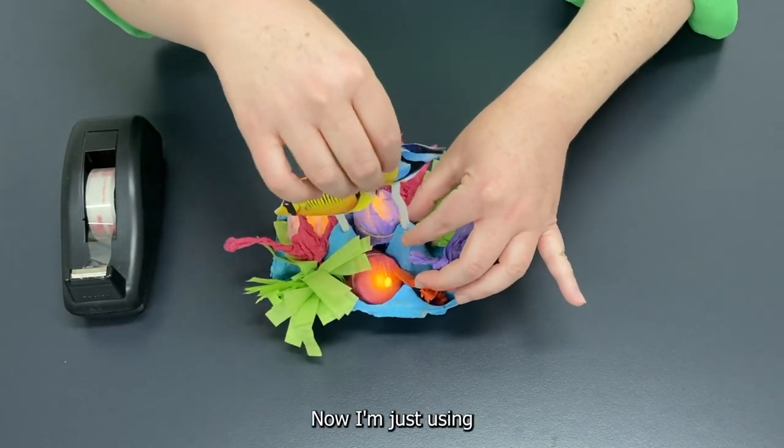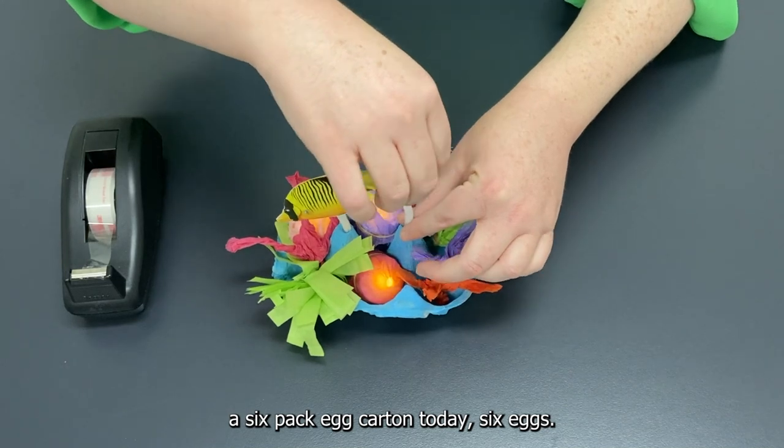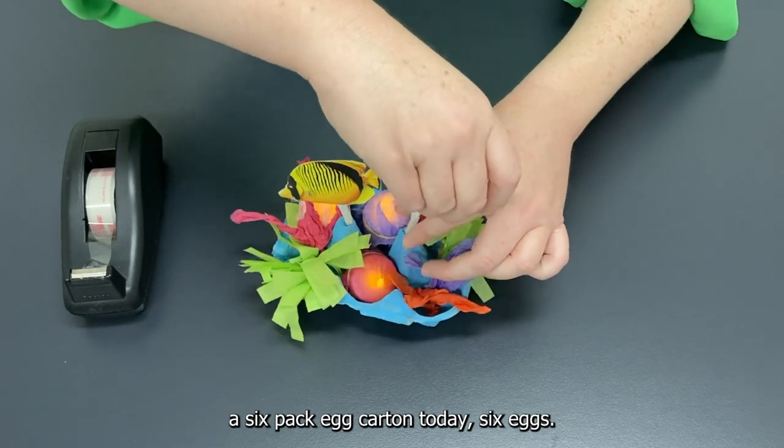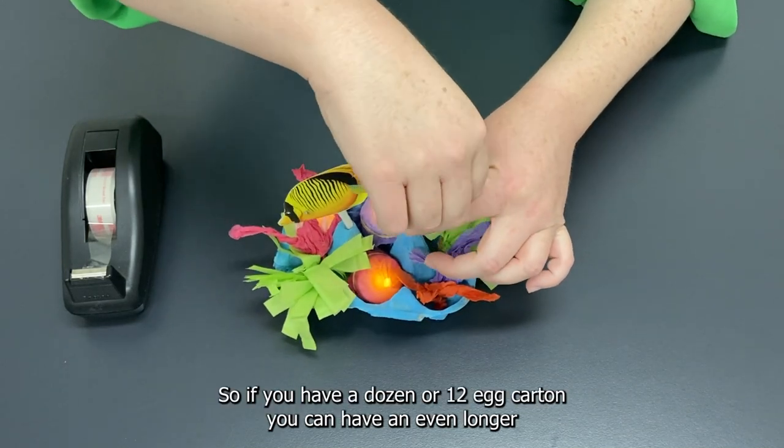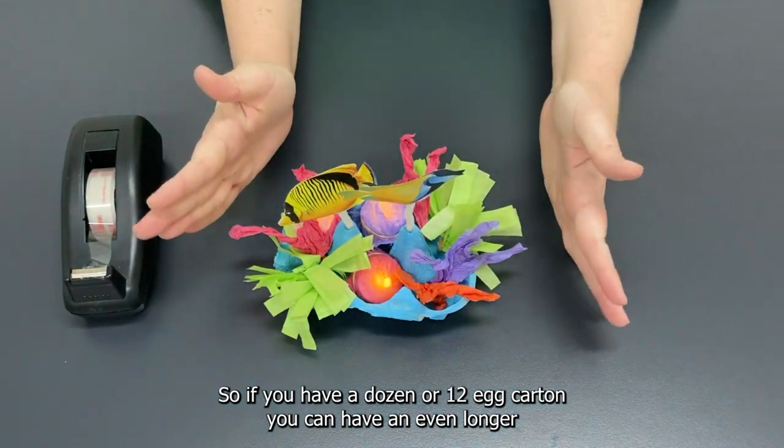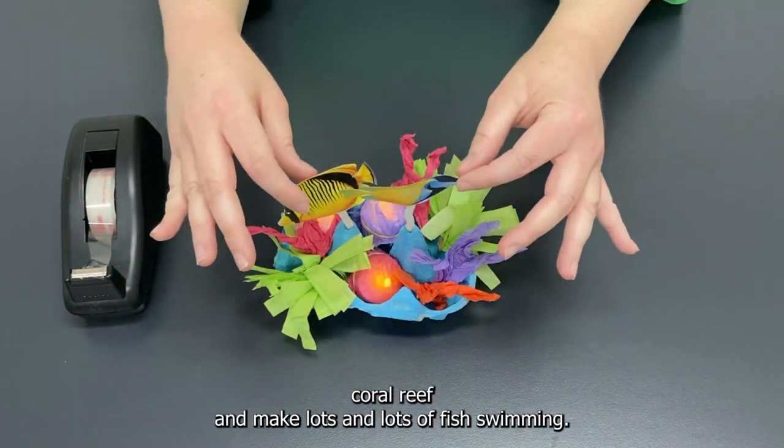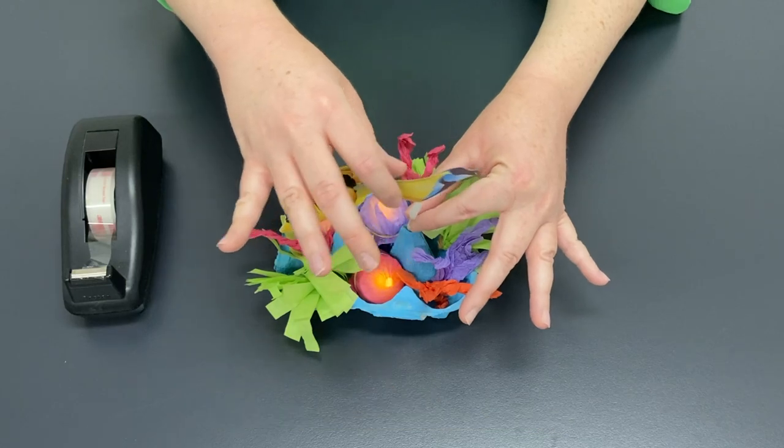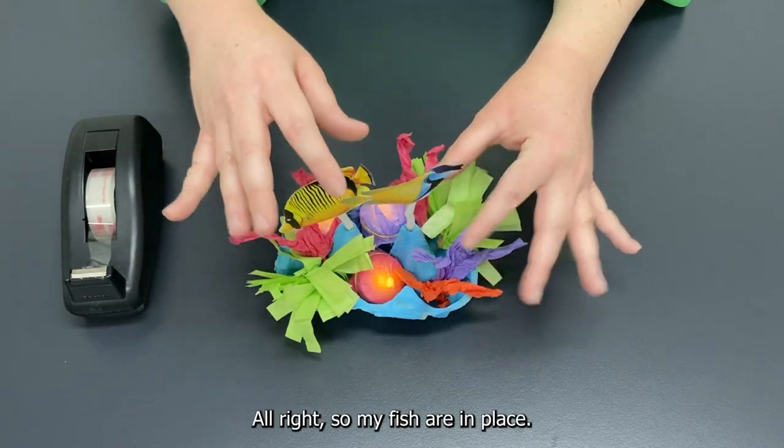Now I'm just using a six pack egg carton today, six eggs. So if you have a dozen or 12 egg carton you can have an even longer coral reef and make lots and lots of fish swimming. Alright so my fish are in place.